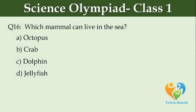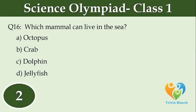Which mammal can live in the sea? Option A: Octopus. Option B: Crab. Option C: Dolphin. Option D: Jellyfish.